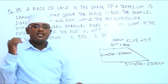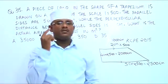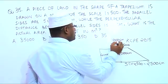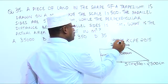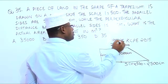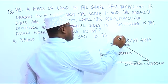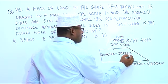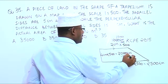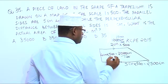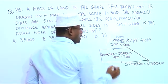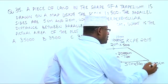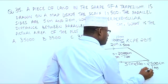How many centimeters make 1 meter? 100 centimeters make 1 meter, so we need to divide by 100. Dividing 1,000 by 100 gives us 10 meters. Dividing 2,000 by 100 gives us 20 meters. And dividing 2,500 by 100 gives us 25 meters.